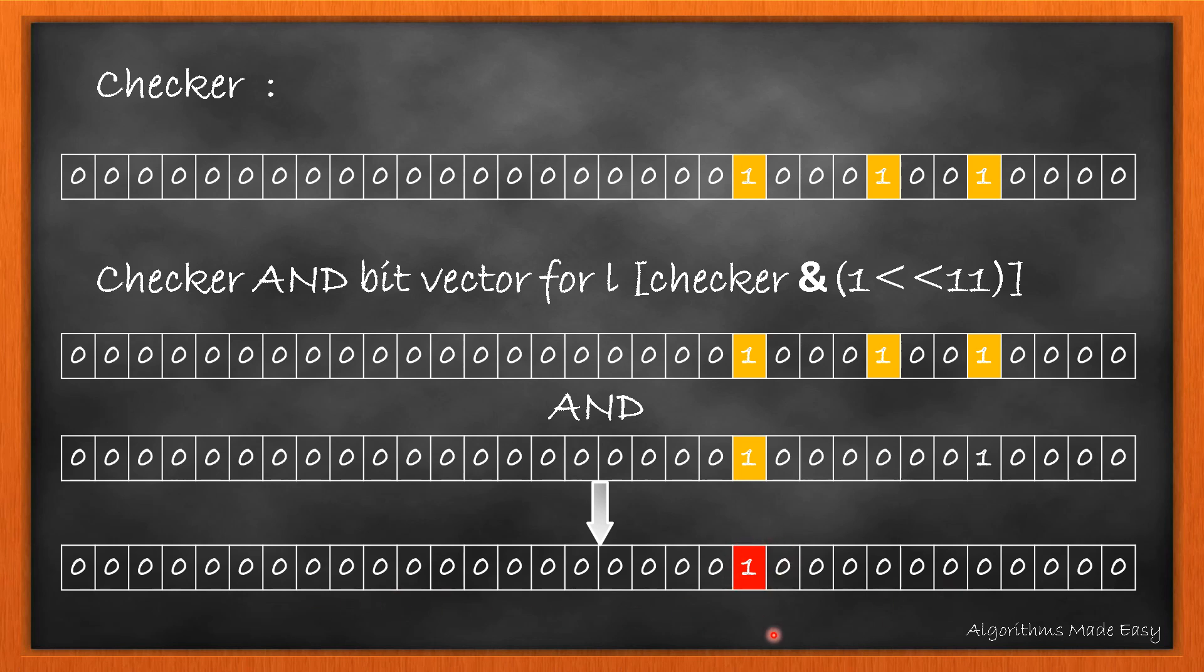That makes the number greater than 0. Here, our exit condition triggers and the loop breaks. This makes our logic return that the string does not have all unique characters.